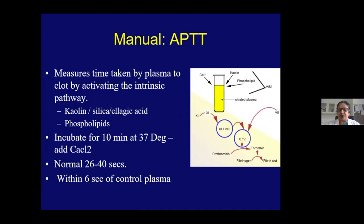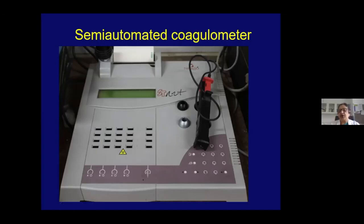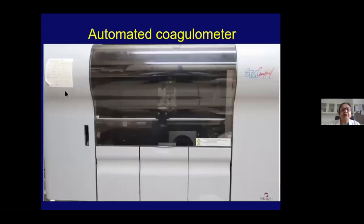Within 6 seconds of the control plasma is taken as the normal cutoff. Semi-automated coagulometers automate the detection of gel formation, giving consistent results even for untrained personnel who cannot manually detect clot formation quickly. We subsequently moved to fully automated coagulometers where everything is a closed system — you just put the sample in the tube and everything else is automated.